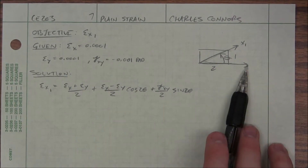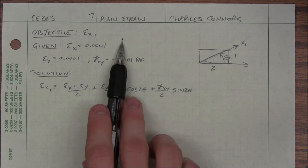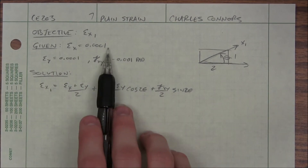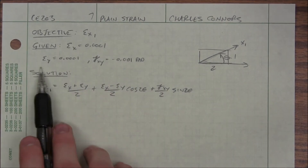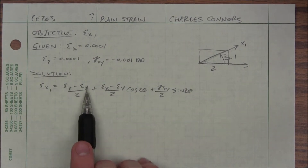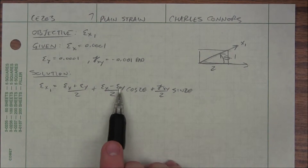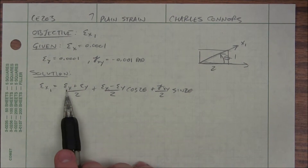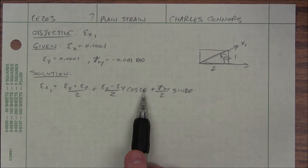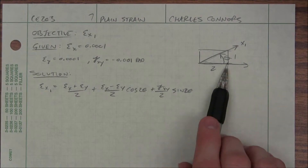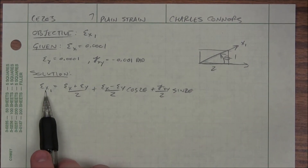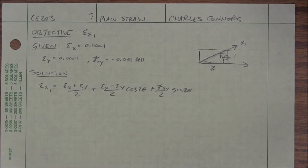My theta equals zero when theta equals zero — that's where these equations are valid, that's where they come from. So I plug in the values for my normal strains and my shear strain, I put in the angle that I want to know my new strain at, and I get my answer.